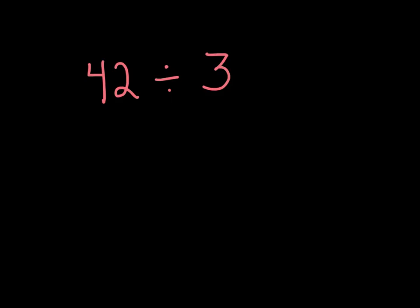In this example, 42 divided by 3 — we're going to see if 3 goes into 42 evenly. This is basically asking: is 42 divisible by 3? Will 3 go into it evenly? Is it a factor of 42? Remember, factors are numbers that we multiply together to get a product — the answer to a multiplication problem.